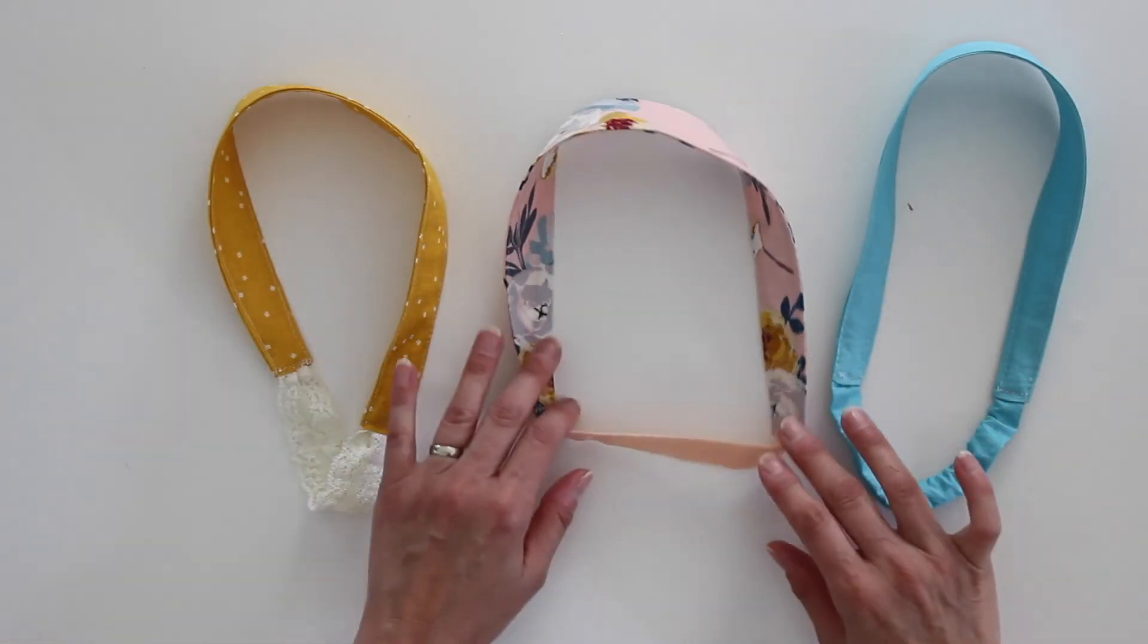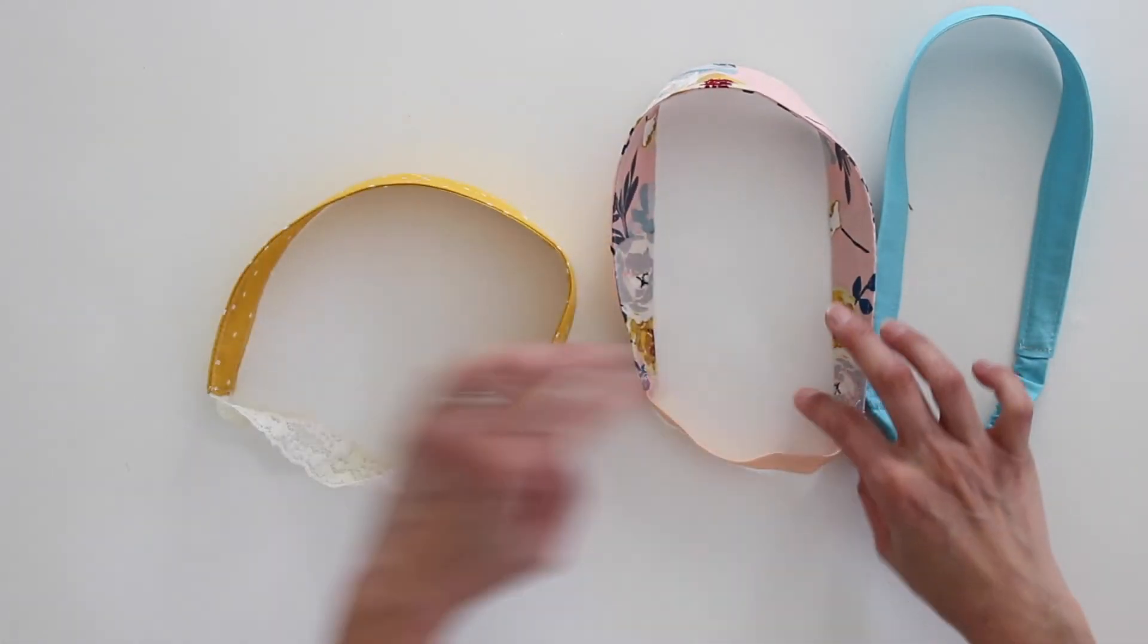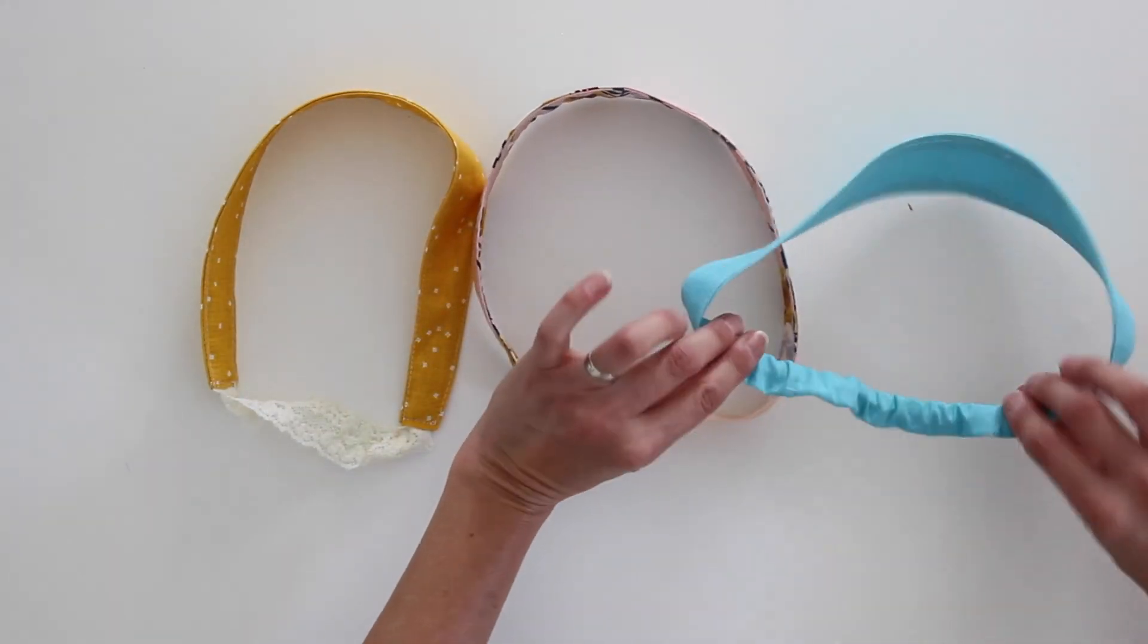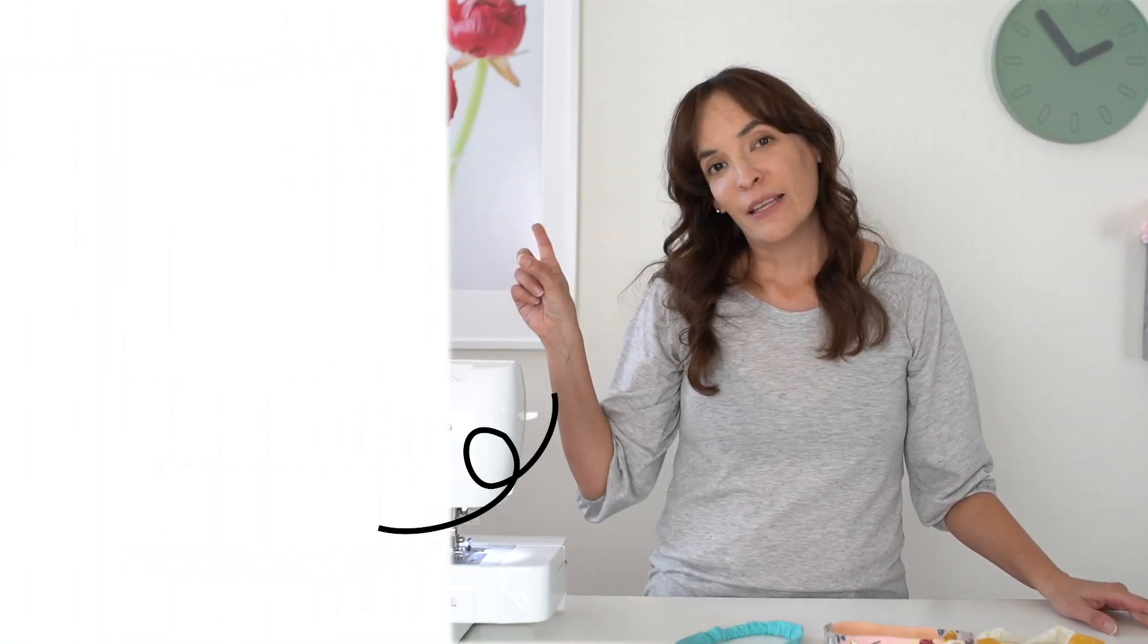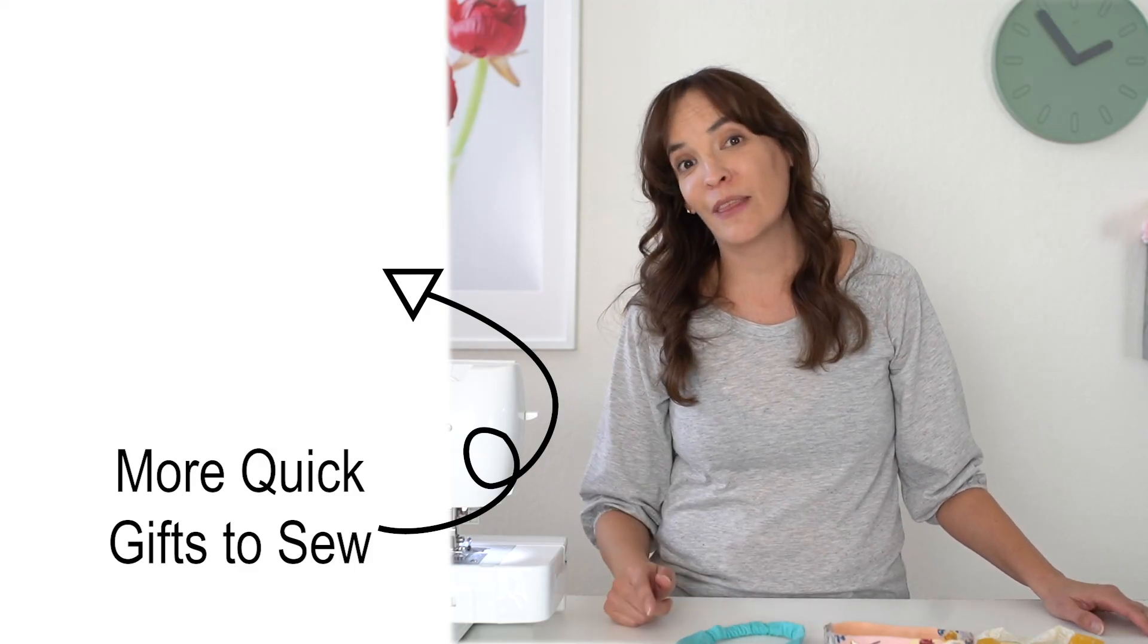So here are what all of these headbands look like finished. Here is the lace one. Here's the fold over elastic. And here is the covered elastic. And all three of these can make great gifts. Check out this link if you're interested in seeing another way to make a headband, this time entirely with knit stretch fabric.